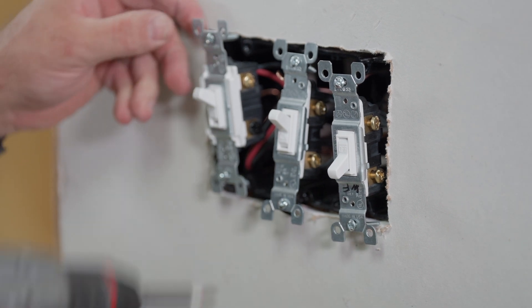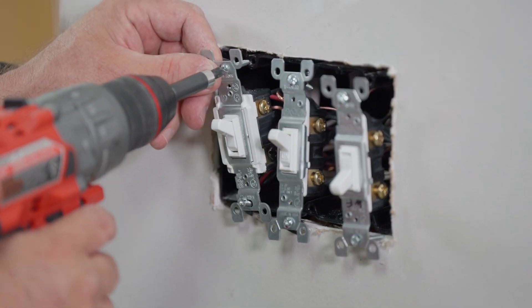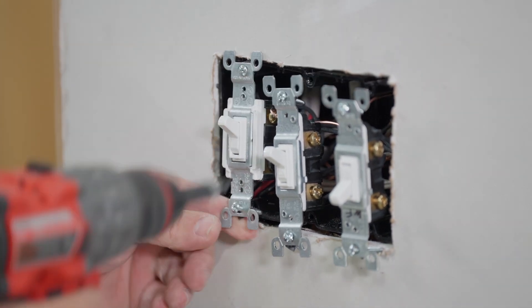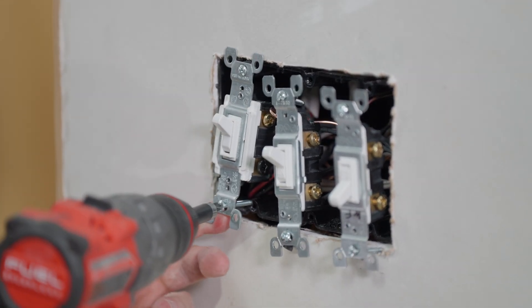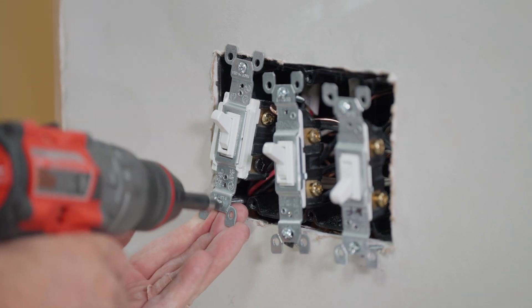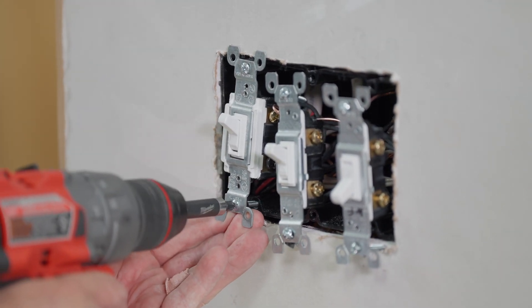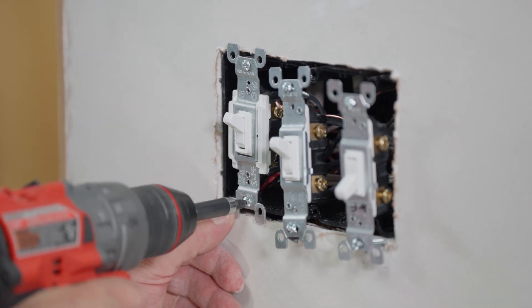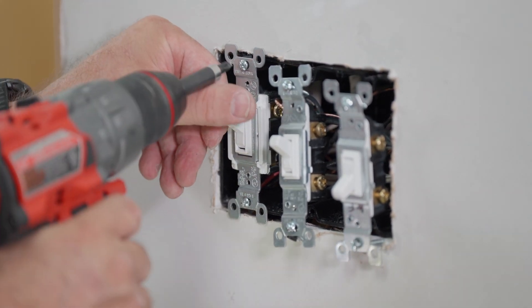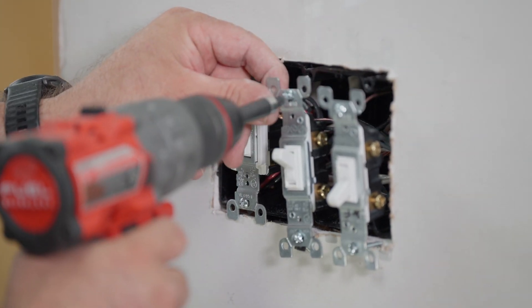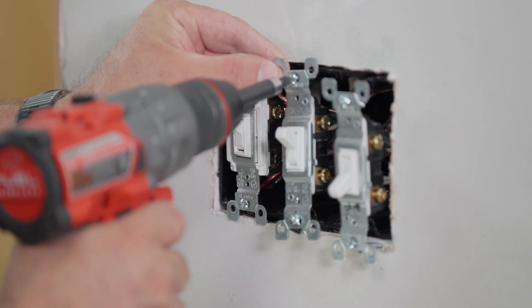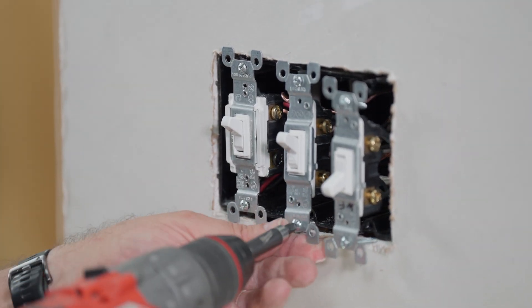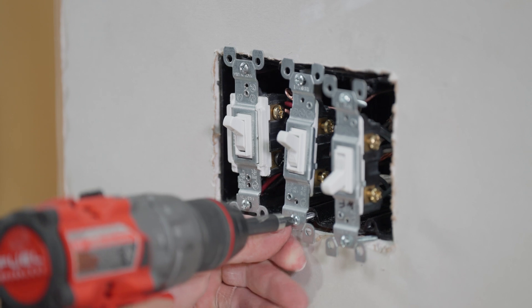You also have to be careful when you're screwing each one of these in that you don't over tighten it. This is a plastic box and it's really easy to strip the box out if you're too fast, too much pressure. You want to make sure you get in there and tighten it up. So what you'll find these plastic boxes move around a little bit. You may tighten this first switch up but by the time you get to the third switch the box has pulled out of the wall more. So you'll have to go back and tighten each one.